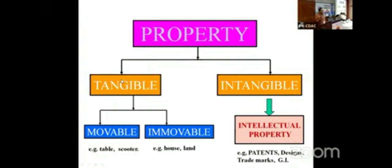Property rights were once considered a fundamental right, but Indira Gandhi removed it from the fundamental rights list and brought in Article 300A. That is why now the government is able to acquire land for roads and other purposes. So exclusion is the most important property of property rights. When something is intangible and exclusive — nobody can even touch it — that becomes the biggest problem in IP.